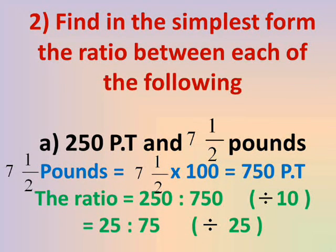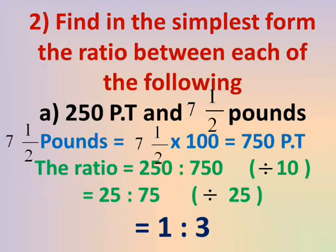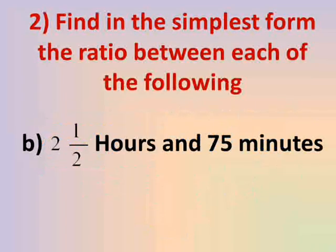We divide both by 10 to get 25 to 75. Both 25 and 75 are divisible by 25, so dividing gives 1 to 3. Number B: 2 and a half hours and 75 minutes. We need to convert from hours to minutes — from the larger unit to the smaller.